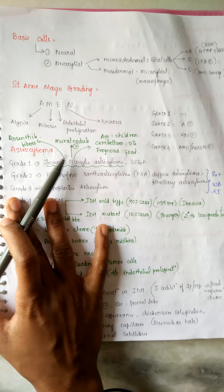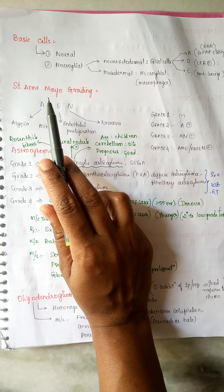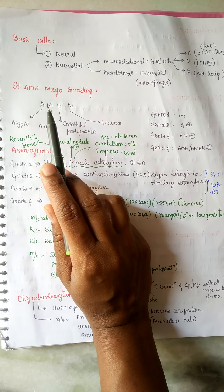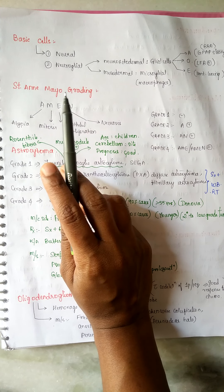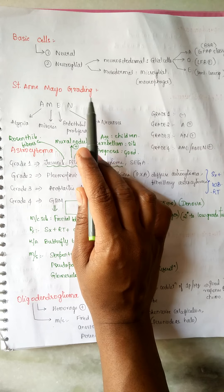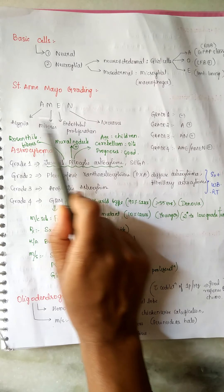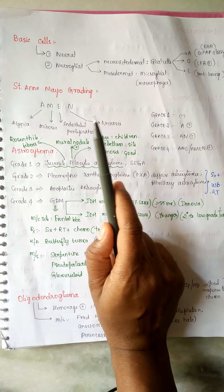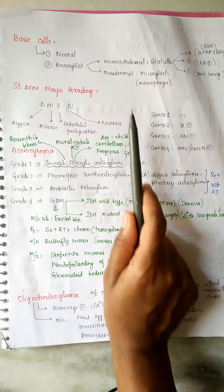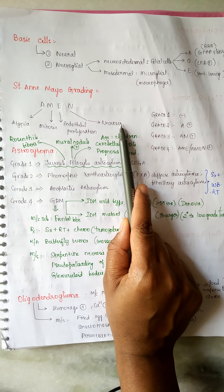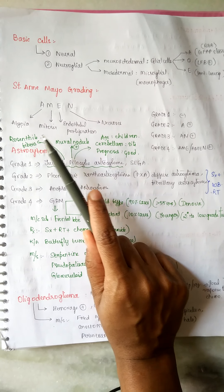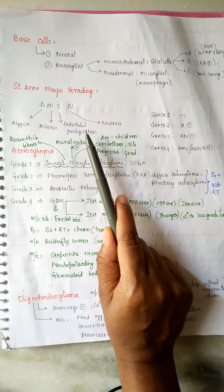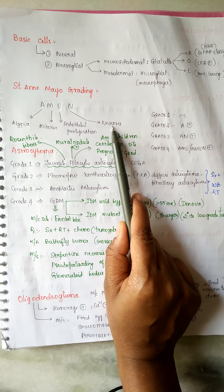Coming to brain tumor grading, it is termed as the Saint Anemio grading. According to that, AMEN stands for: A is atypia, M is mitosis, E is endothelial proliferation, and N is necrosis. Remember: atypia, mitosis, endothelial proliferation, and necrosis.